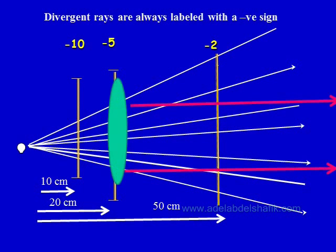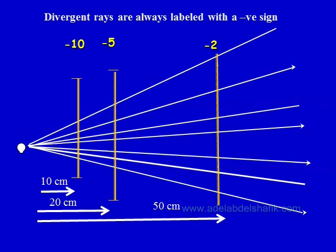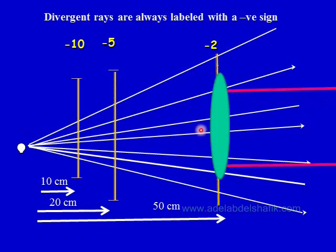The same applies at 20 centimeters from the object: the divergence is minus 5, and you need to put a lens of power plus 5 with a focal length of 20 to get the rays parallel. Again, at 50 centimeters you need a plus 2 lens with a focal length of 50 to make the rays parallel — the amount of divergence at that distance is minus 2.